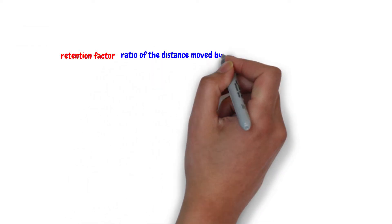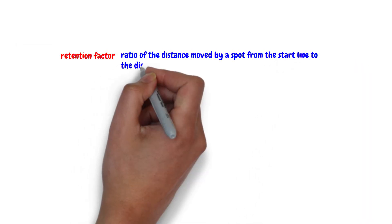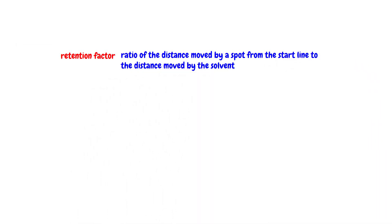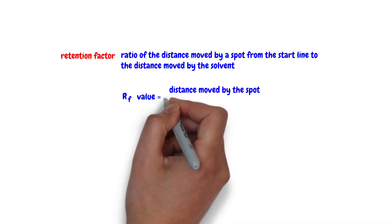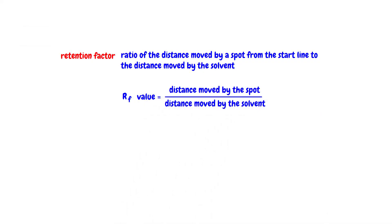An important quantitative aspect of paper chromatography is the calculation of retention factor values. The RF value represents the ratio of the distance moved by a spot from the start line to the distance moved by the solvent. The formula for RF values is the distance moved by the spot divided by the distance moved by the solvent. No units are associated with RF values as they cancel each other out.